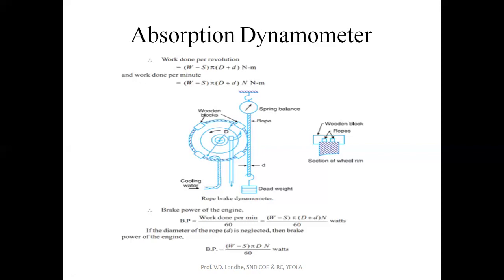This type of dynamometer is called as rope brake type of dynamometer. The brake power is measured by the formula: (W − S), that is the weight minus spring balance reading, multiplied by the linear velocity π·D·N divided by 60, giving brake power in watts. These are the two types of absorption dynamometer: prony brake and rope brake type.